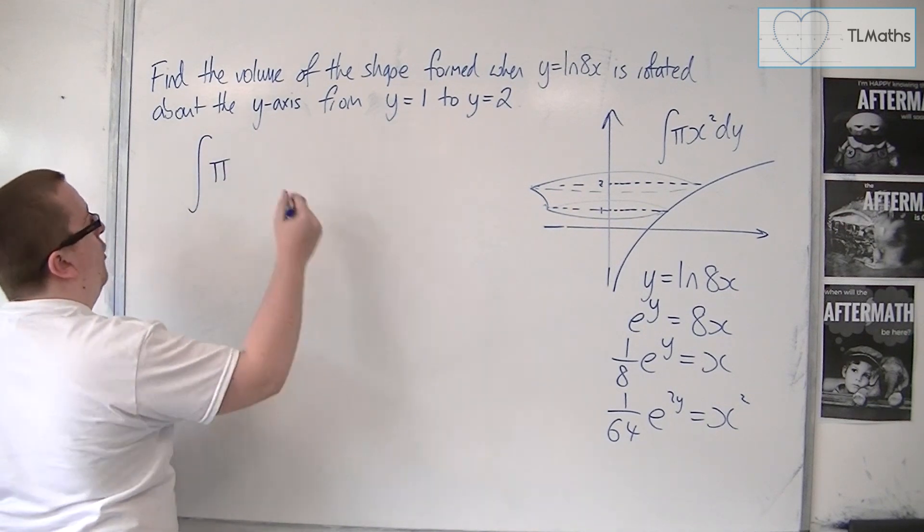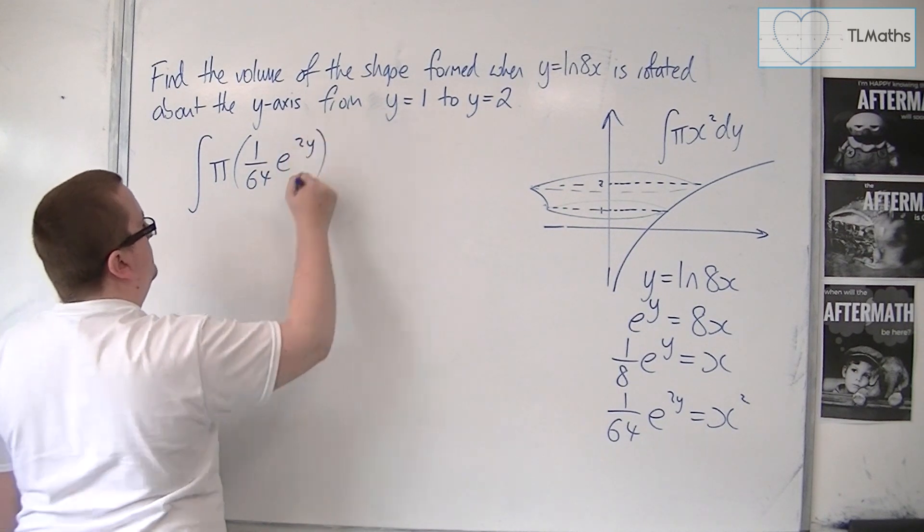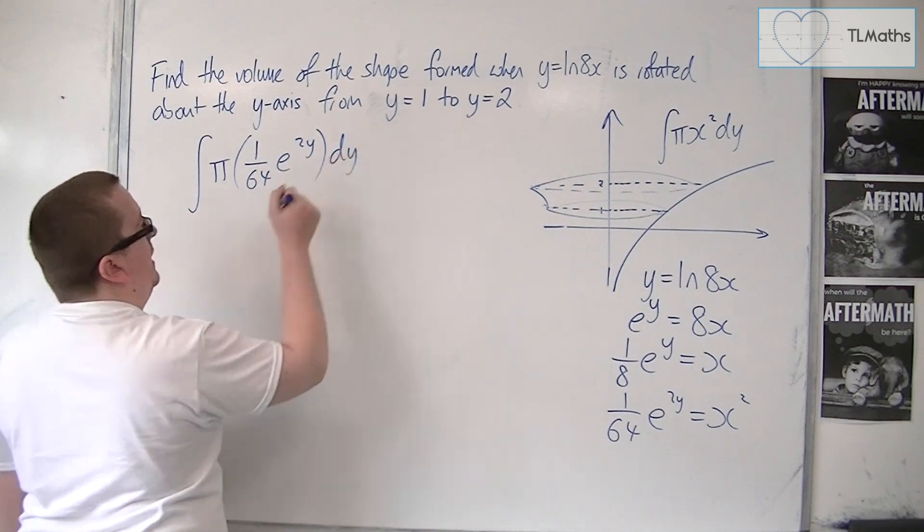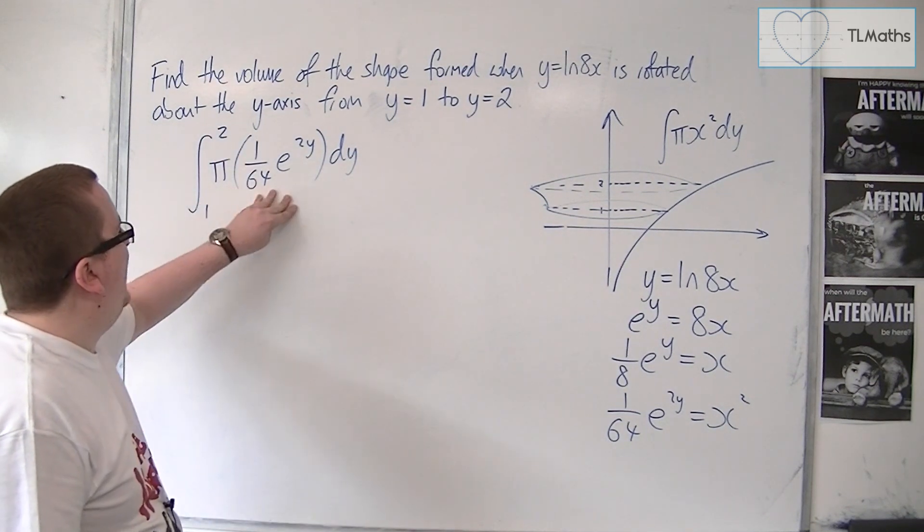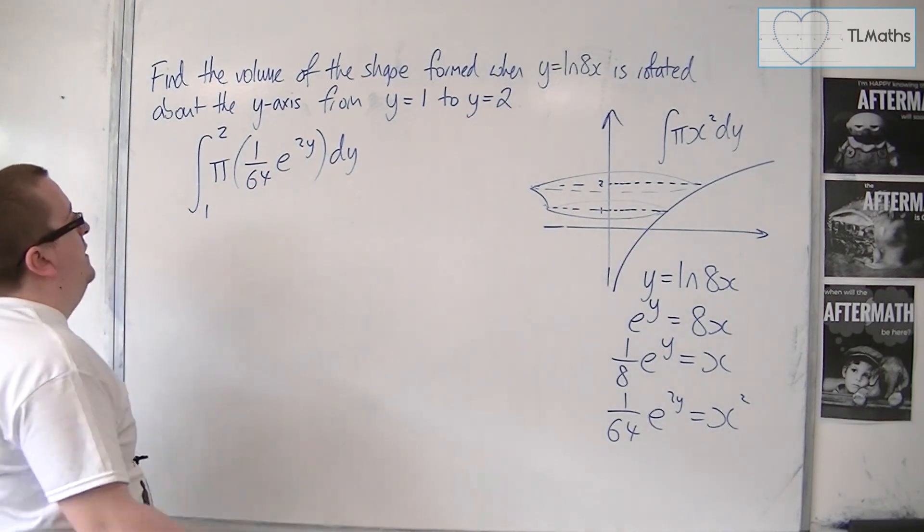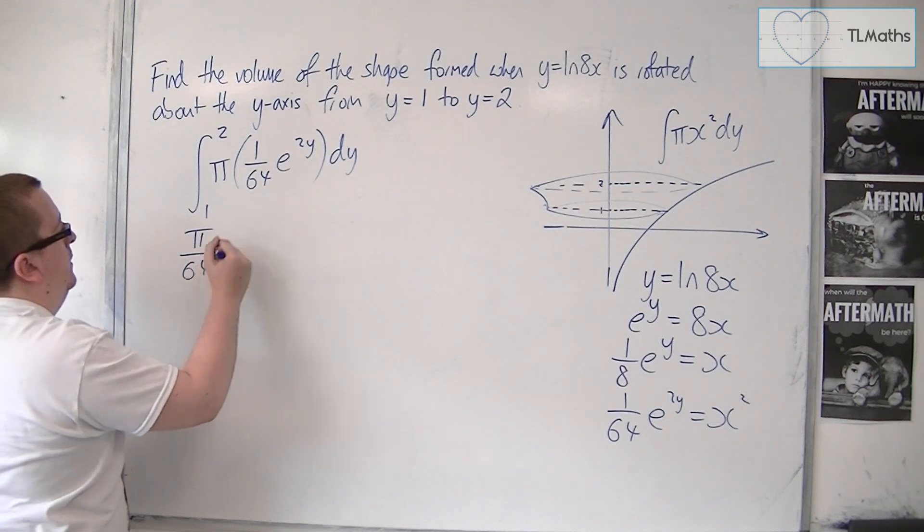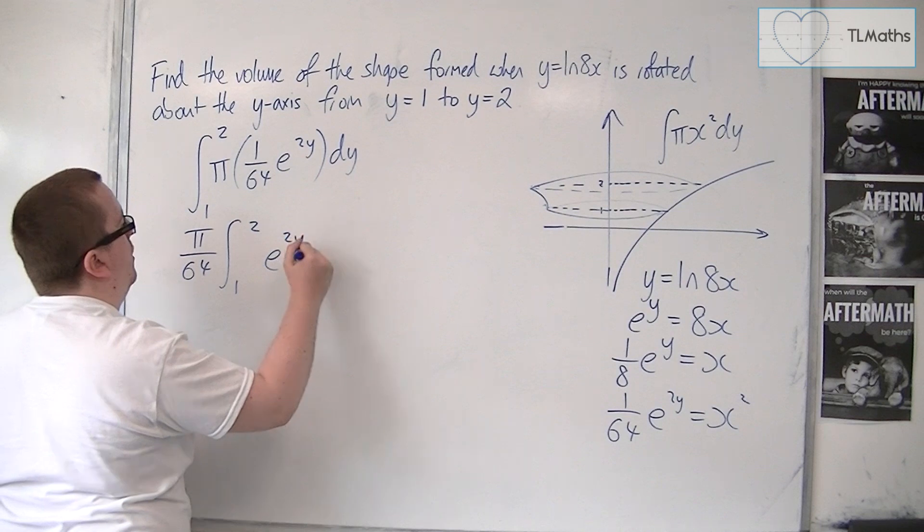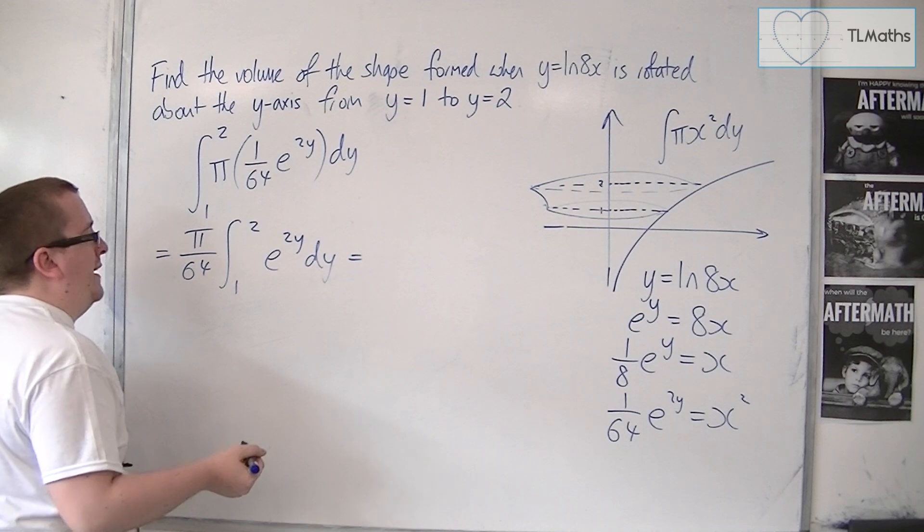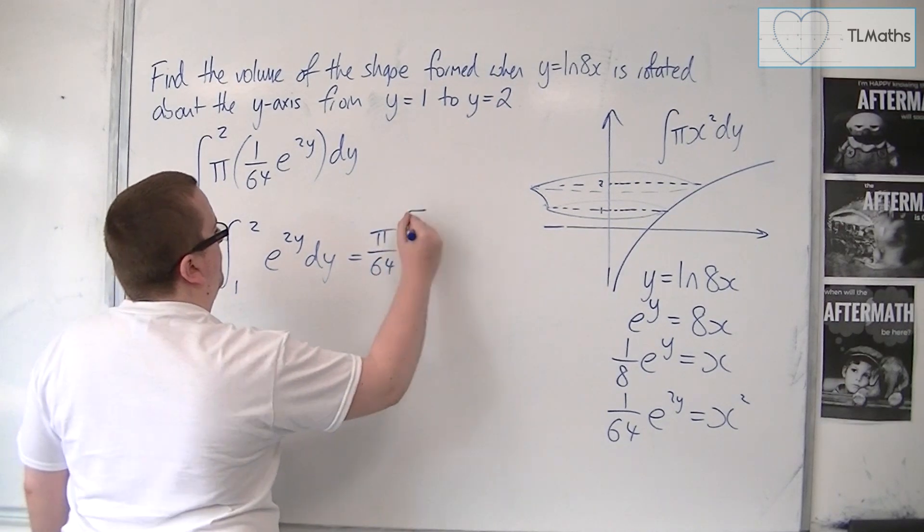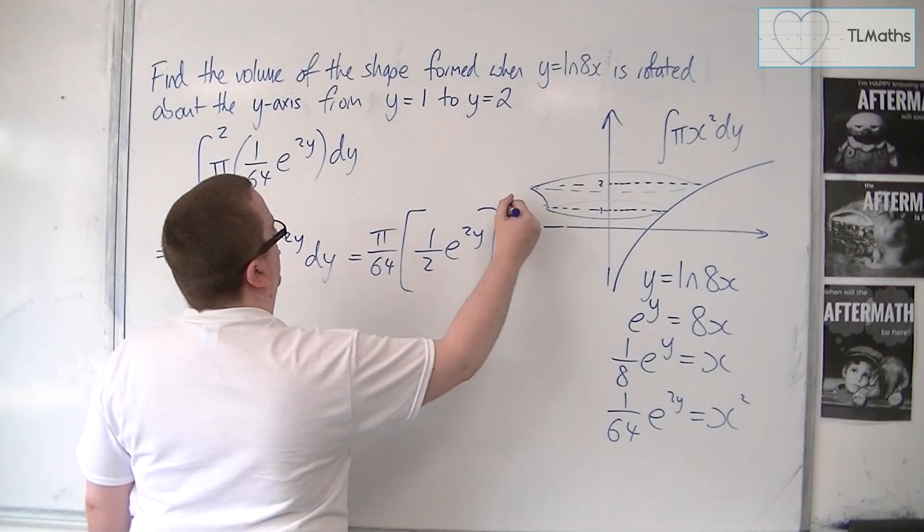So we're looking at the integral of π of 1 over 64 e to the 2y dy, integrated between 1 and 2. OK, so that's the π x squared dy. Now, the π and the 1 over 64 can both come outside. And I'm going to be left with e to the 2y dy inside. So that's quite a nice integral to work out. π over 64. The integral of e to the 2y is a half e to the 2y, evaluated between 1 and 2.